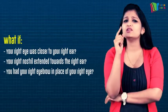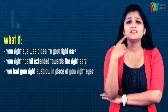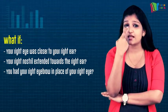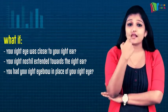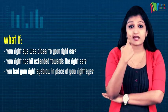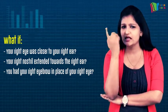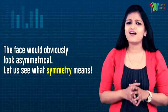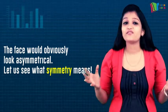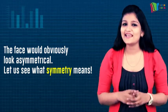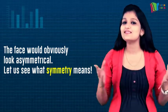Hello and welcome to the SMINDAR session. Students, I was wondering why it looks odd if a human face has a right eye near a right ear, right nostril extended towards the right ear, and right eyebrow at the place of the right eye. It's weird. The answer is quite obvious — the face will look asymmetrical. Today in this session we will discuss symmetry.